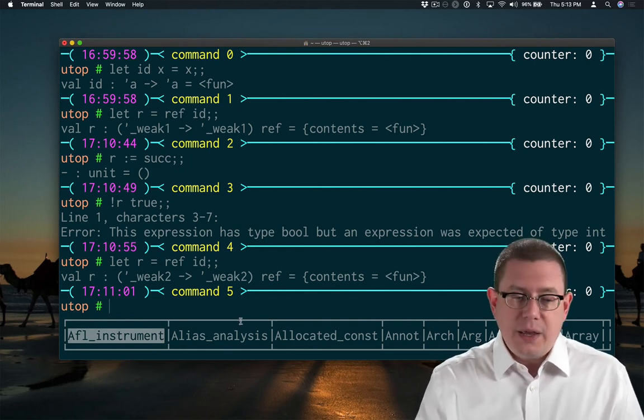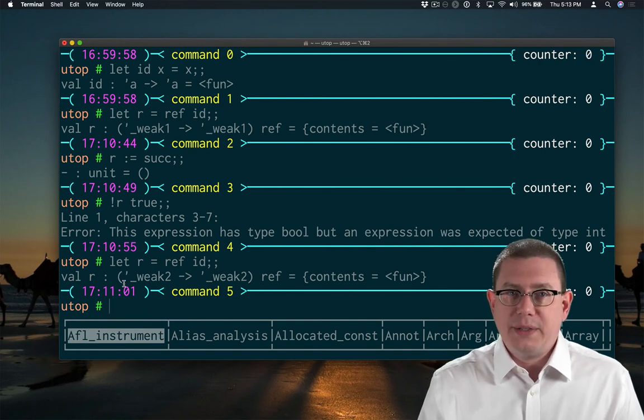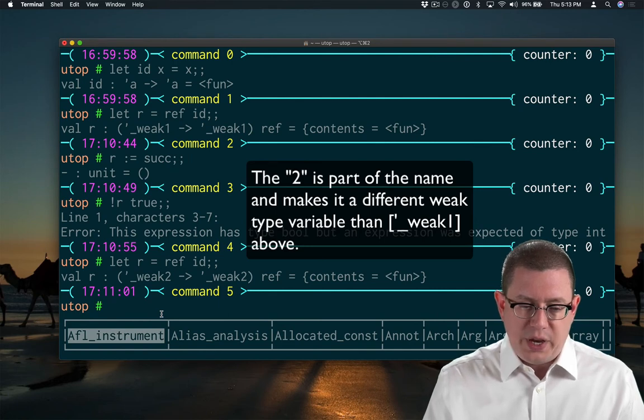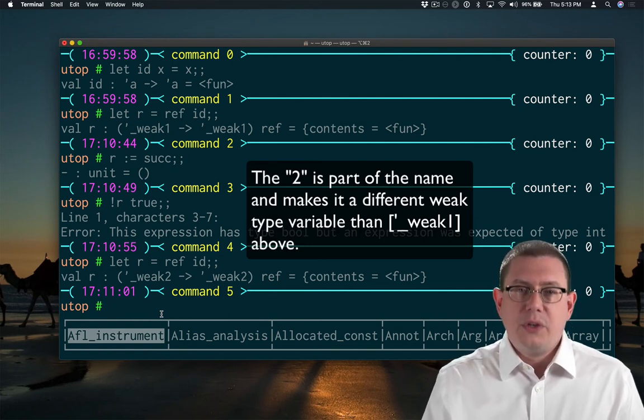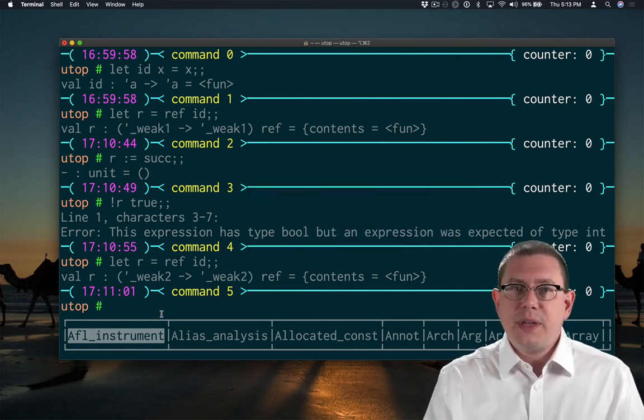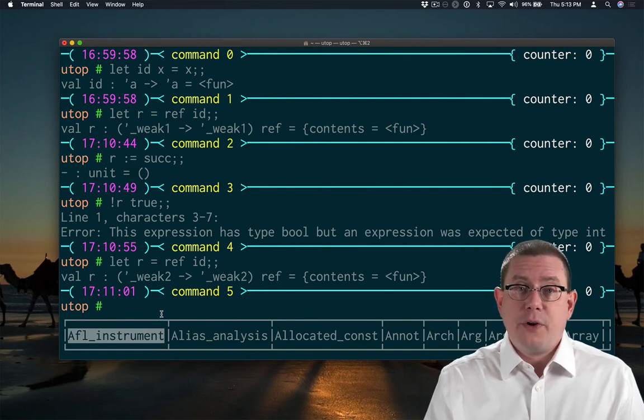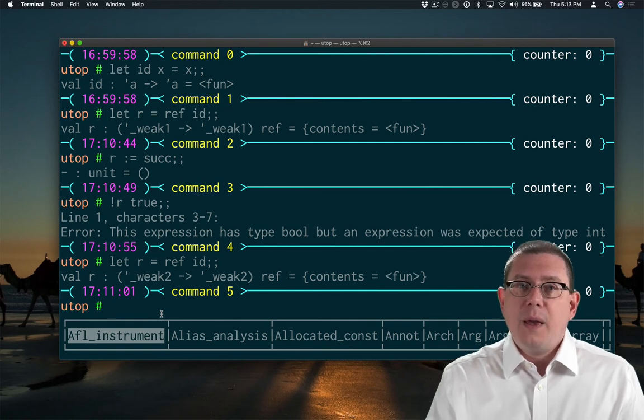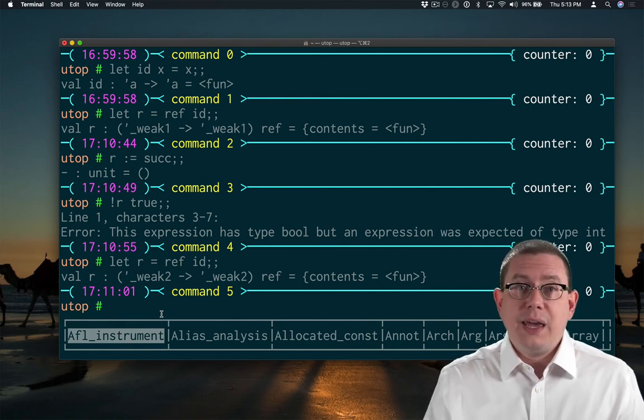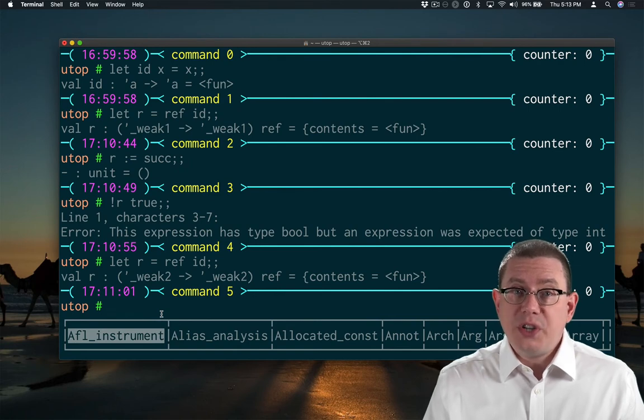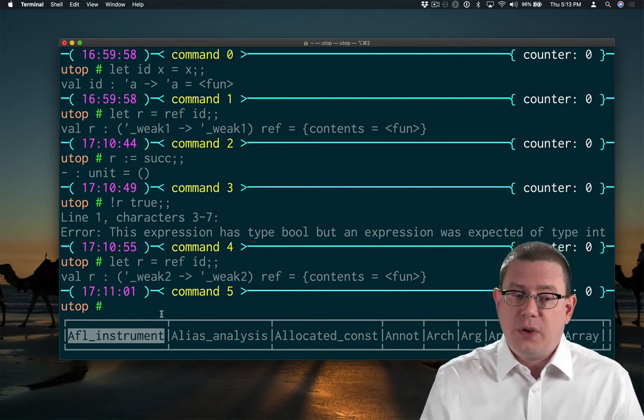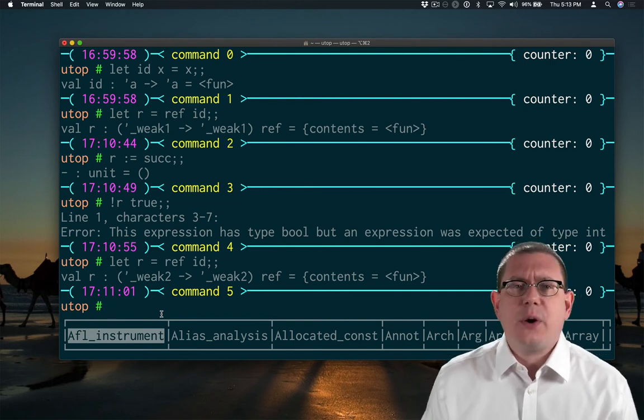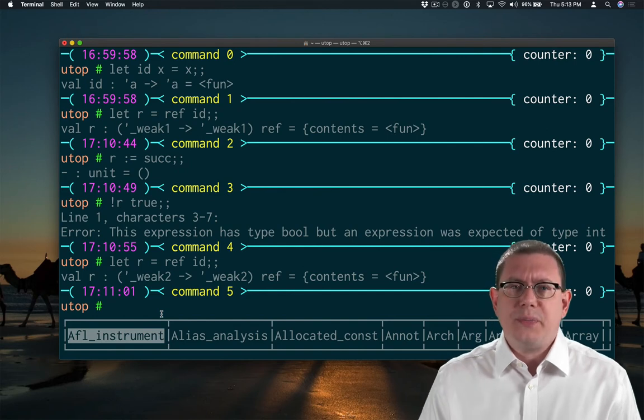That's what any type variable showing up here with underscore weak means. So here we got the type tick underscore weak two arrow tick underscore weak two ref. So this is a ref to something that is a function. That function is going to take the same input and produce the same output type. But that function is not polymorphic. It's just there's an unknown type here that hasn't been solved for yet, essentially. OCaml doesn't know whether I'm going to stick an int arrow int function in there, or a bool arrow bool, or something else.